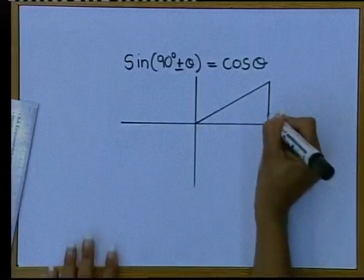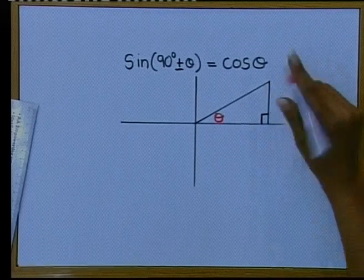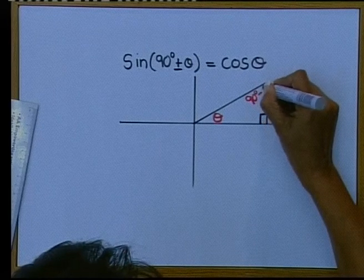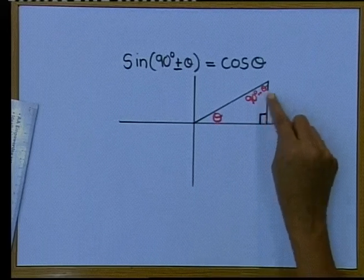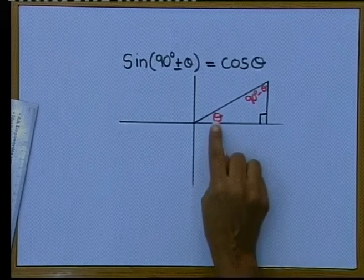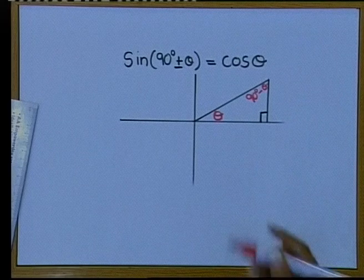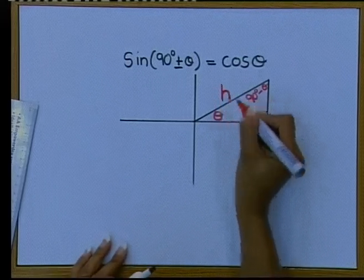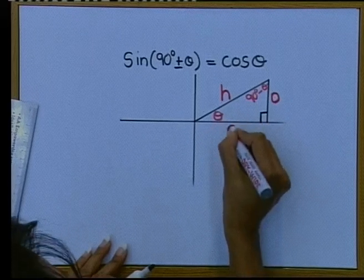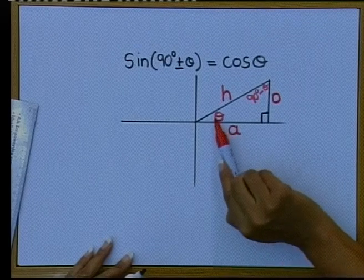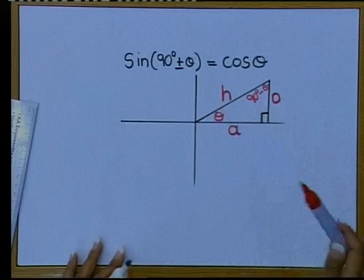Look very carefully. This is my 90 degrees, and if this is theta, then this angle here will be 90 degrees minus theta. For example, if this was 60, you would say that is 90 minus 60, which gives 30. But I don't know the size of this angle, so we call it 90 minus theta. For theta, this is always your hypotenuse. Opposite theta is the opposite side, and the side closest to theta is your adjacent side. The hypotenuse is always opposite the 90.